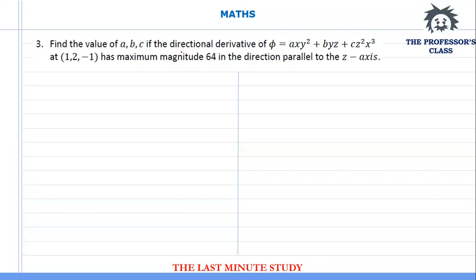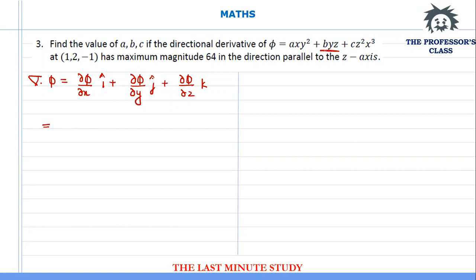We will start with finding out the gradient of phi, which is given as del phi by del x in the i direction, plus del phi by del y in the j direction, plus del phi by del z in the k direction. When I differentiate with respect to x, the middle term has no x component so it becomes 0. The first term gives ay² and the third term gives 3cz²x², which is the i component.